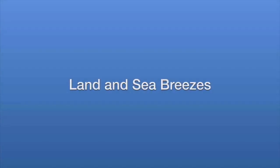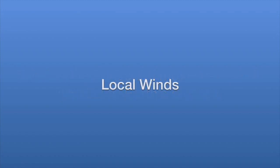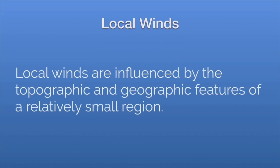In this video, we'll be looking at land and sea breezes. To review, as we discussed in class today, wind is the horizontal movement of air parallel to Earth's surface. When we talk about land breezes and sea breezes, we're actually referring to a form of local winds. A local wind is defined as any wind influenced by the topography or the geography of a particular region. So we're really looking at coastal situations, much like we would see on our coasts on Long Island.